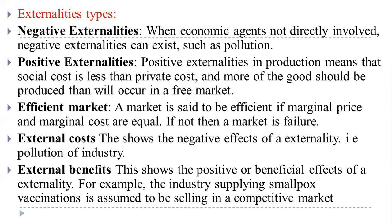Efficient market: a market is said to be efficient if marginal price and marginal cost are equal. If not, then there is market failure. Marginal price is the difference between original price and original cost; if these two are equal, we can call it an efficient market. External cost shows the negative effects of an externality, such as pollution from industry. External benefits show the positive or beneficial effects of an externality.